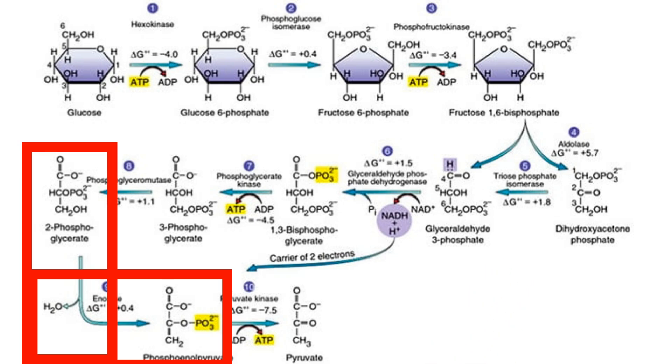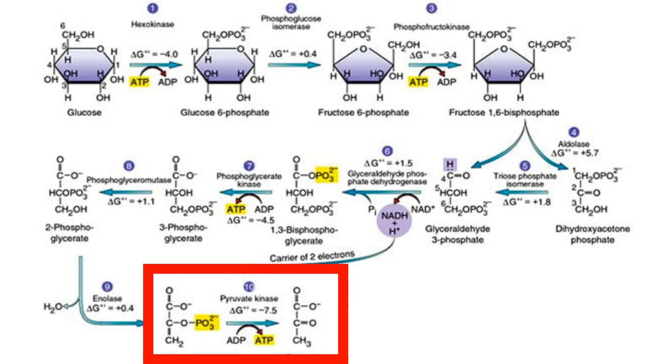After this, another phosphate group is stolen by an ADP to produce an ATP, and our phosphoenolpyruvate turns into good ol' pyruvate.